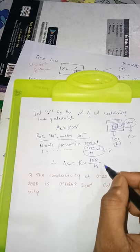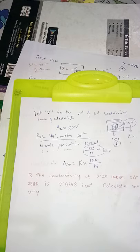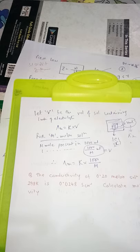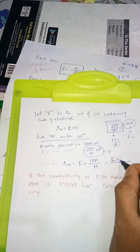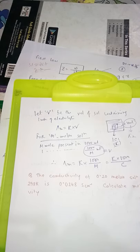That is why we have the formula: lambda m equals kappa into 1000 by m. So you need to know that lambda m equals kappa into 1000 by m. In general, you can also write lambda m equals kappa into 1000, replacing m with concentration c.